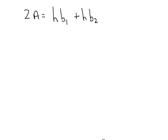Now at this point, what we would like to do is isolate the term containing hb sub 1, which means we need to subtract the term hb sub 2 from both sides. And when we do that, we'll end up on the left-hand side with 2A minus hb sub 2 is equal to h times b sub 1.